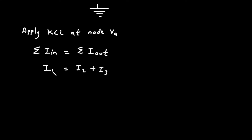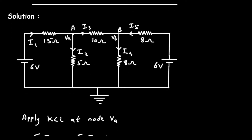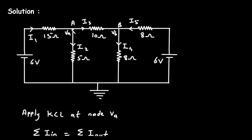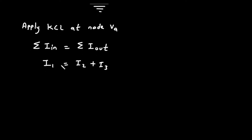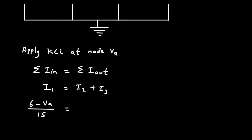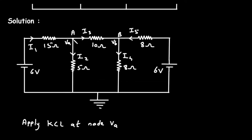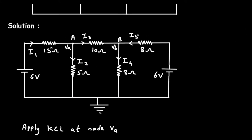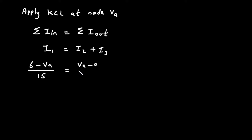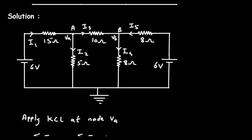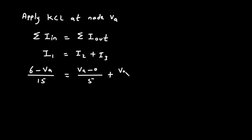We can write i1 as (6 − Va) / 15. So (6 − Va) / 15 = i2 + i3. i2 can be written as (Va − 0) / 5, and i3 is (Va − Vb) / 10.